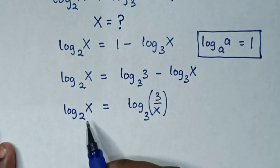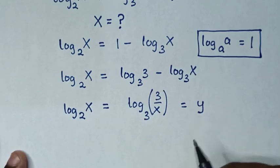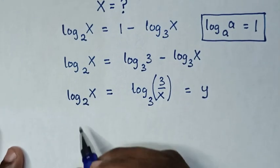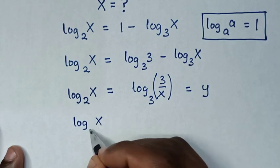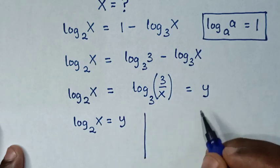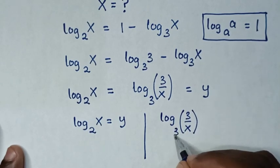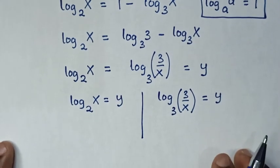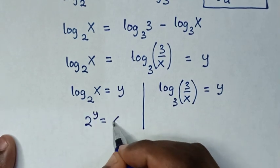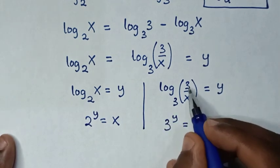Since this log is equal to this log, we let both equal to y. Comparing the two equations: log of x base 2 equals y, and log of (3 over x) base 3 equals y. Then 2 to the power of y equals x, and 3 to the power of y equals 3 over x.